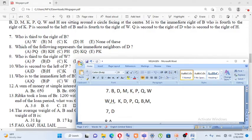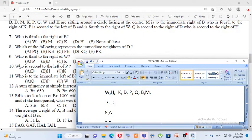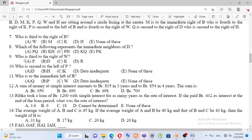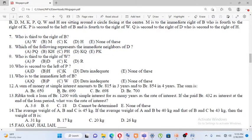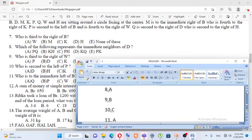Question number eight. Who is third to the right of W? One, two, three - D. The answer is B. Who is second to the left of P? Second to the left, one, two - K. The answer is C.